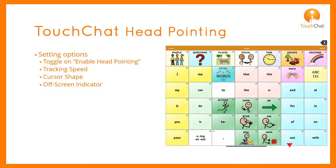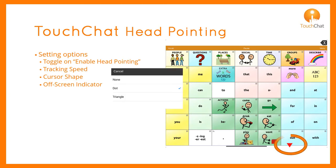The off-screen indicator tells you when you have taken the tracking off the screen. You can select no indicator, or a dot or triangle.